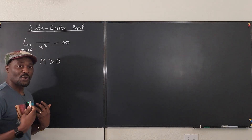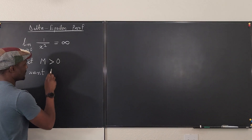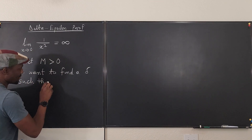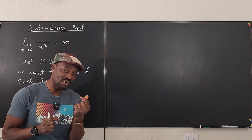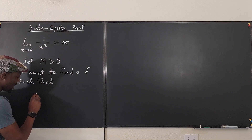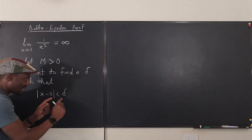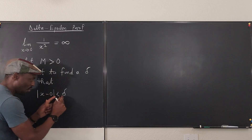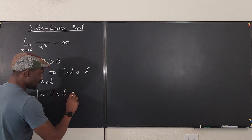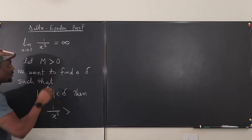What we want to show is that there exists a delta — we want to find a delta such that if delta is small enough, that is the gap between x and zero is less than delta. If the absolute value of x minus zero is less than delta, and if delta is small enough so this gap is small enough, then 1 over x squared will always be greater than this number M.